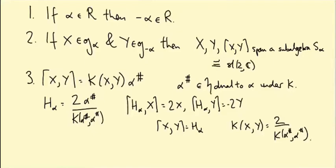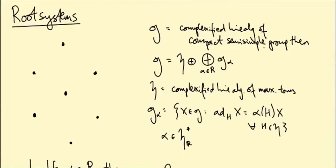What I'm going to do in this video is show that another nice property of this diagram carries over to this more general setting, namely the fact that these root spaces are all one-dimensional. In the SU(3) example, the root space was generated by e_{13}, this one by e_{12}, e_{31}, etc. — they're all one-dimensional, and that's going to be true in this compact semi-simple setting as well.